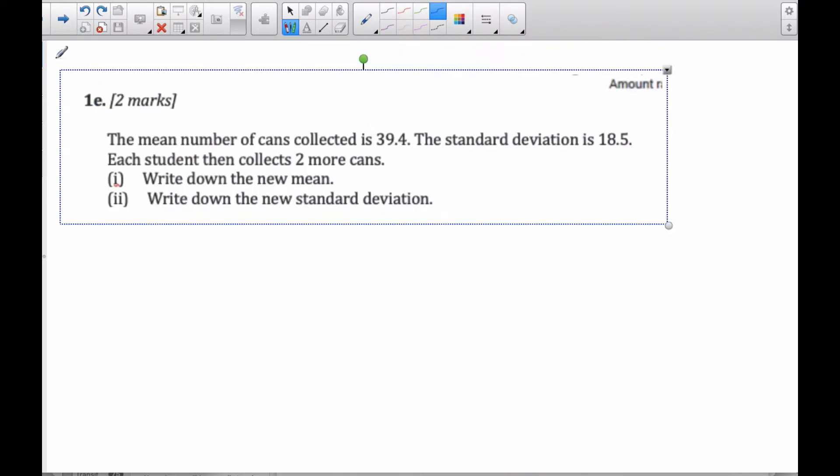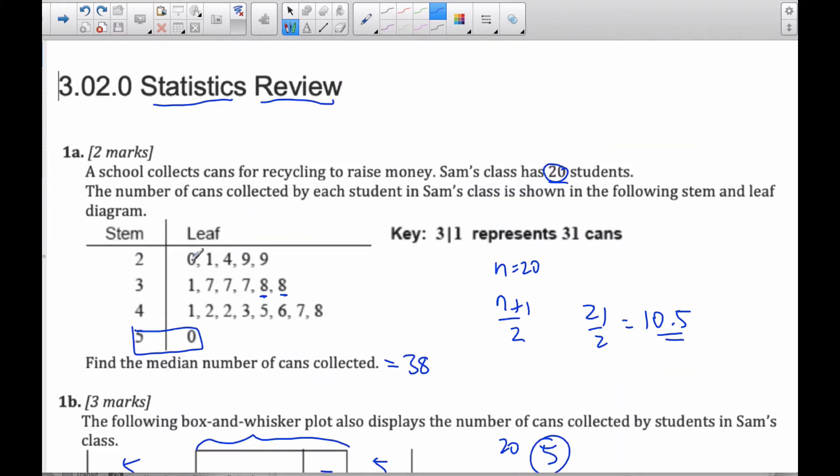And then, now we have the mean number of students who collected cans is 39.4. And the standard deviation is 18.5. Each student then collects two more cans. So if I think about this, so that means this is now 22, 23, 26, 31, 31, 33, and 39, 39, and so on.